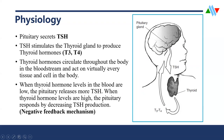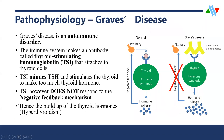Graves' disease comes in when that mechanism is tampered. Being an autoimmune disorder, Graves' disease leads to production of some antibodies. This antibody specifically is the thyroid-stimulating immunoglobulin, TSI. This specific antibody goes to the thyroid and attaches to it, mimicking the action of TSH — it does pretty much what TSH does — stimulating the thyroid gland to produce or secrete more T3 and T4.